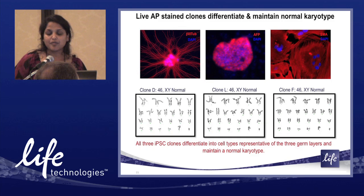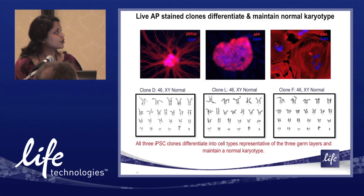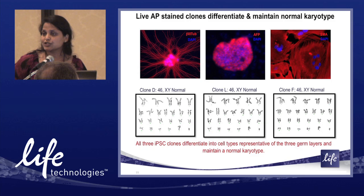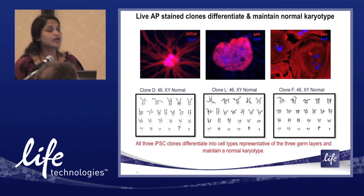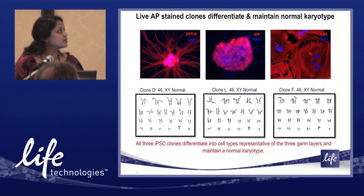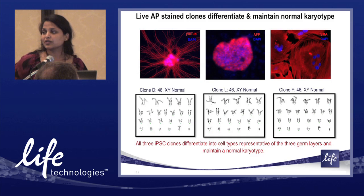Finally, to demonstrate pluripotency, a representative clone was pushed through random embryoid body (EB) formation. The clones differentiate into cell types representative of all three germ layers. Importantly, all three clones were stereotypically karyotypically normal.